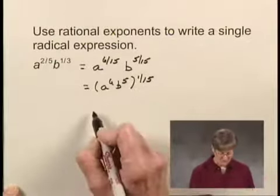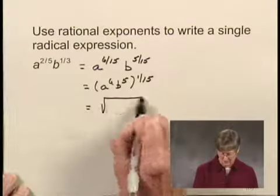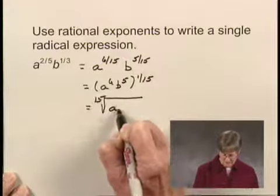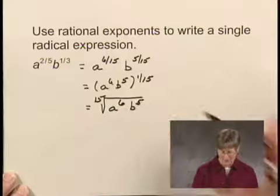When I have one over fifteen, I know that I can write a radical with an index of fifteen, so I would write the fifteenth root of a to the sixth power times b to the fifth power.